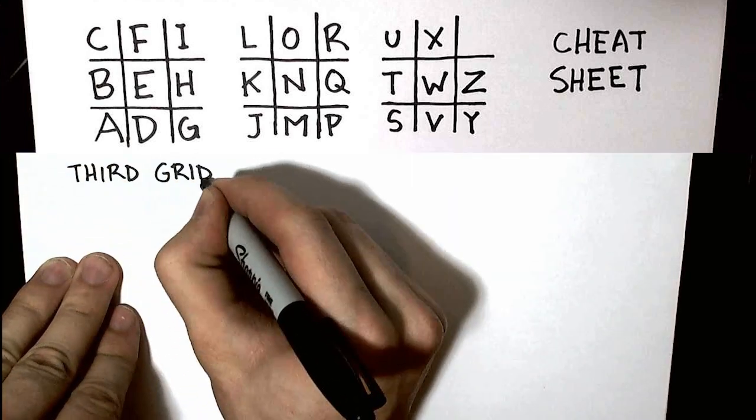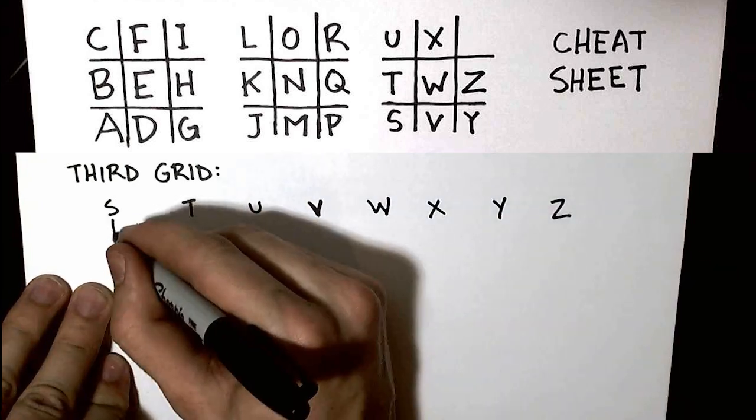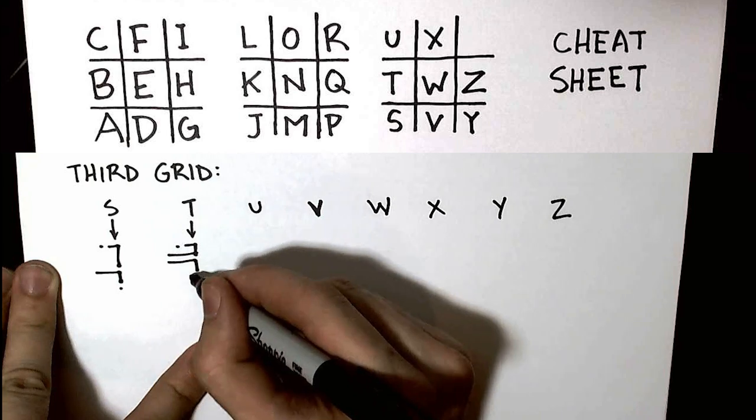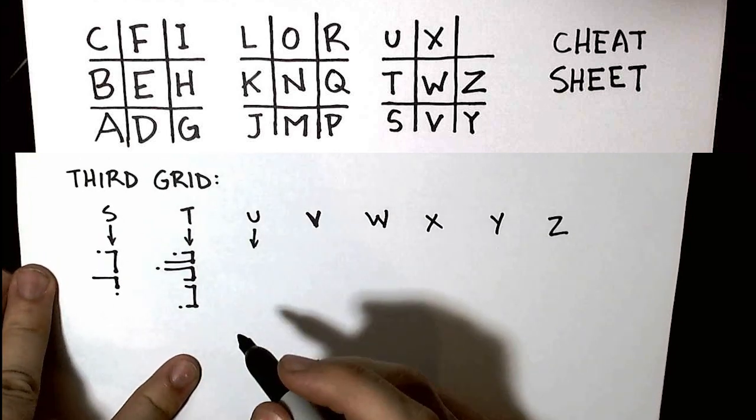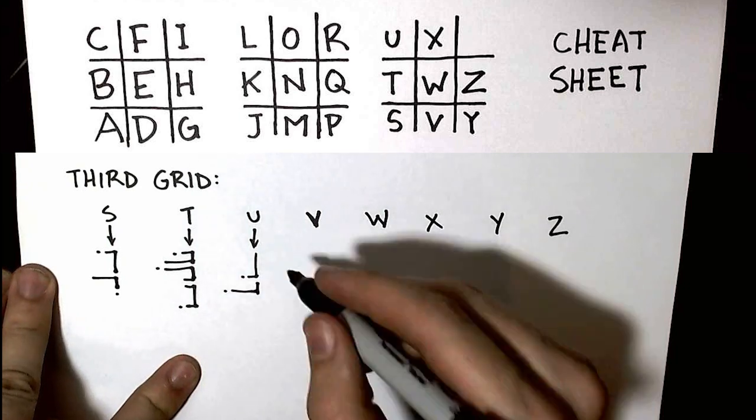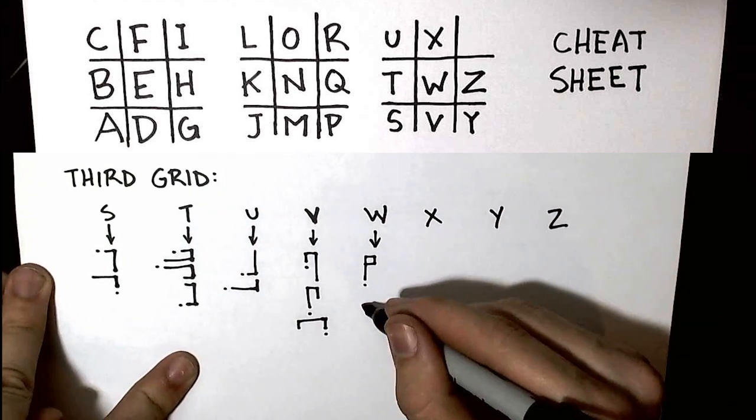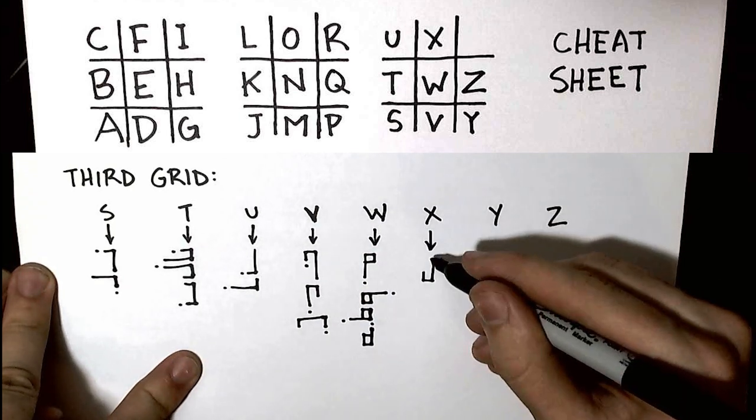Alright, so for the third grid, we just make one minor change again from the second grid. What you're going to do is you're just going to add a dot at the end of one of the lines for each position in the grid for each letter. Really, it doesn't matter at all at the end of which line you add the dot.